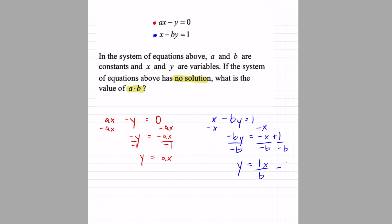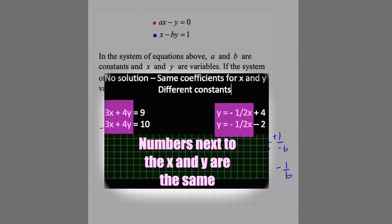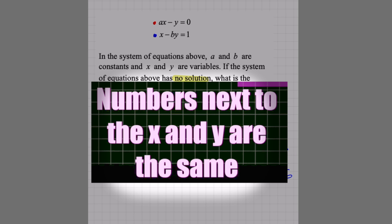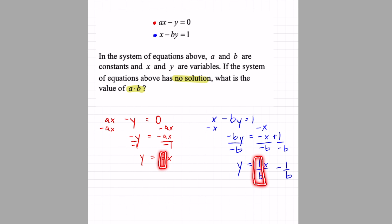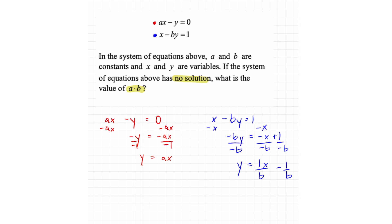In a no solution, it doesn't matter what the constants are, but I do need to make these two values the same. And like the previous question, if I'm trying to make something the same, I can just set up a simple equation. A equals 1 over b. To get the value of a times b, I could just multiply this by b and I get ab equals 1.